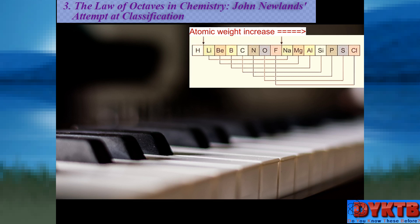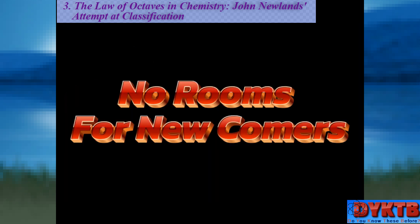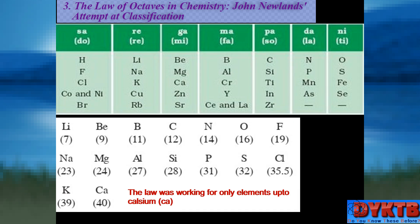Despite the elegance of his idea, Newlands faced challenges. His law of octaves exhibited inconsistencies as new elements were discovered, and not all elements fit neatly into his system. Critics and contemporaries were quick to point out these shortcomings, leading to skepticism about the validity of his classification.